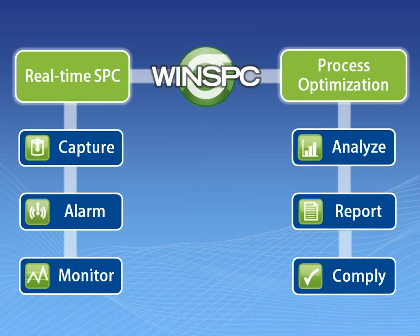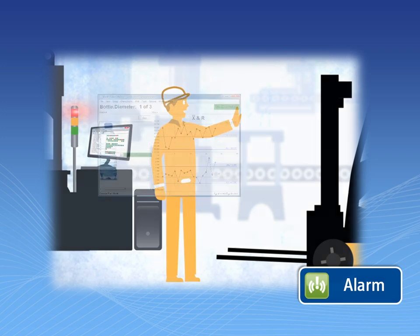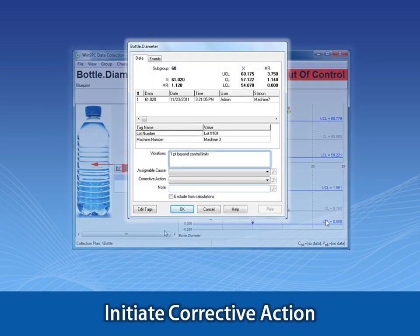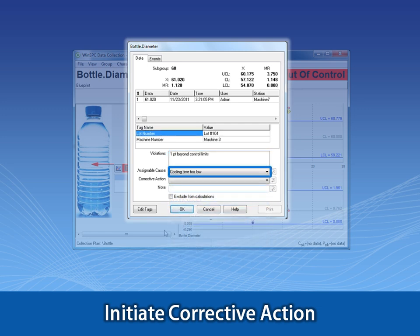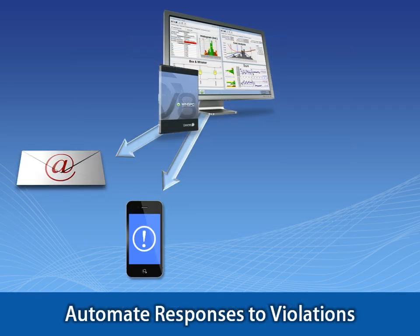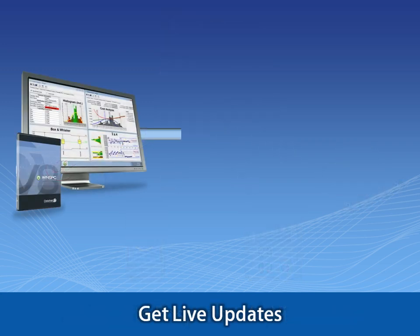Alarming refers to WinSPC's real-time response when a process violates a condition, such as a control limit test. You can configure WinSPC to trigger multiple visual and automated responses, including displaying an out-of-control indicator or corrective action prompt, alerting supervisors by email or other means, adjusting or shutting down a machine, and communicating updates with other systems.